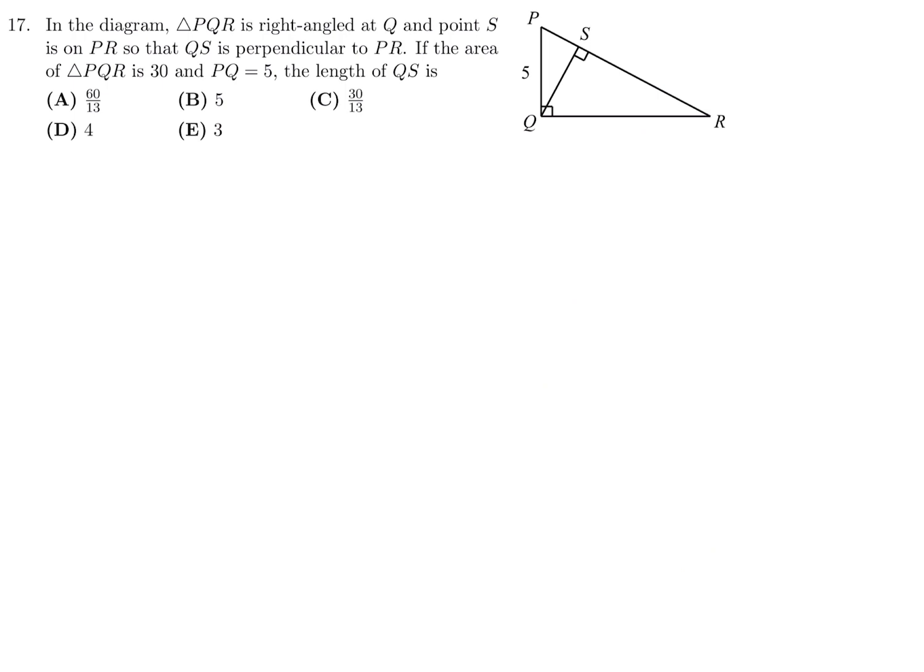In the diagram, triangle PQR is right angled at Q and point S is on PR, so that QS is perpendicular to PR. If the area of PQR is 30 and PQ is 5, the length of QS is. So the area is 30. That's one half base times height. The base is QR. And the height is 5. They've given that to us. So that means we have 60 over 5 is going to be QR. And therefore, QR is 12. So, there we go.